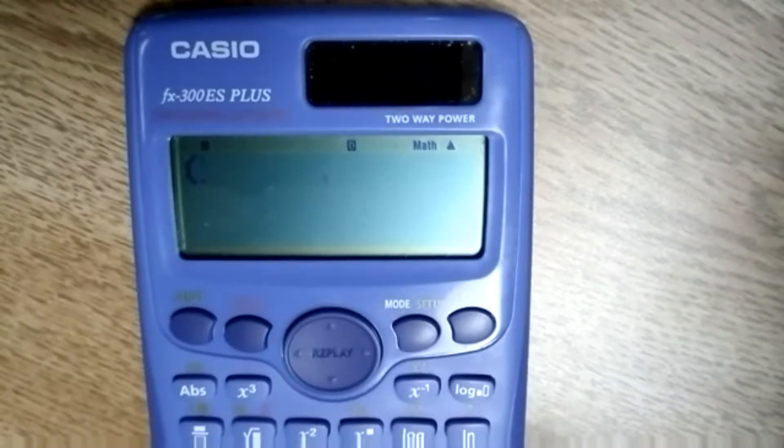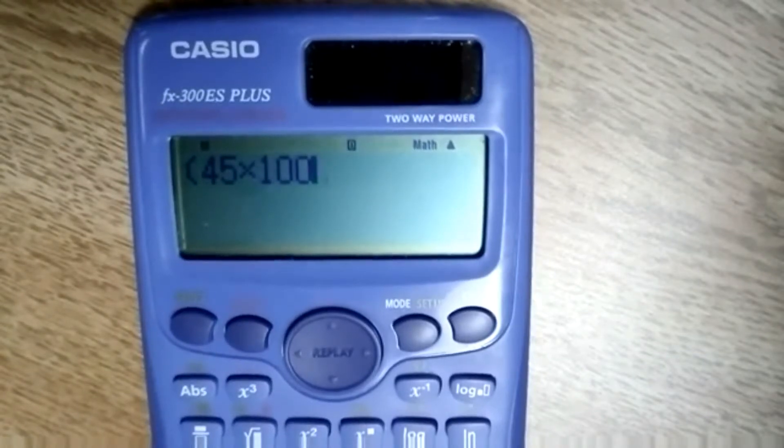Go parentheses. So you'll hit your parentheses key and keep everything in the numerator as one quantity. So don't keep making new parentheses. Just go parentheses 45 times 1,000 times 0.55. Close the parentheses. So the numerator is one quantity.